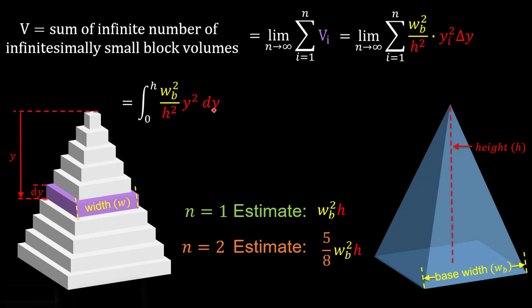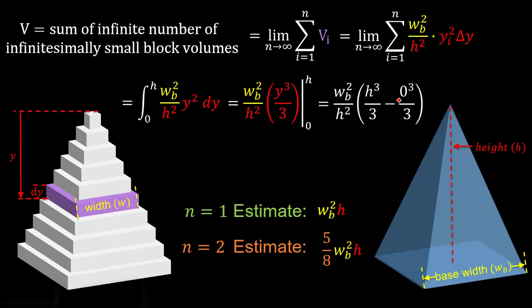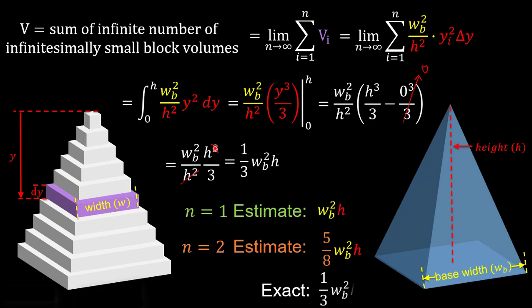Solving this integral is straightforward. Since we're integrating with respect to y, the (w sub b over h) squared term is a constant that stays out front. We evaluate the antiderivative of y squared, which is y cubed over 3, from 0 to h. Plugging in, we get h cubed over 3 minus 0. Combining with the constant, we get (w sub b squared over h squared) times (h cubed over 3), and the h terms simplify to give us the exact volume of 1 third times w sub b squared times h. This is no longer an overestimate — it's exact and less than both of our previous estimates. This same process can be used to find the exact volume of almost any solid as long as you know its dimensions.